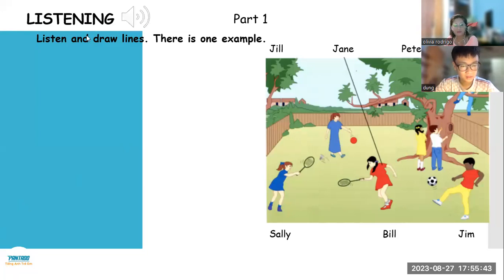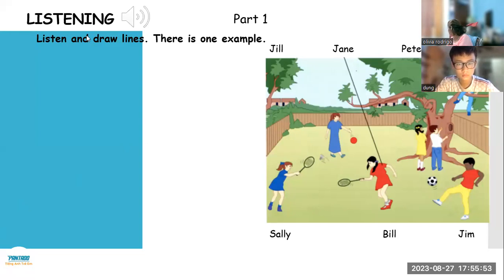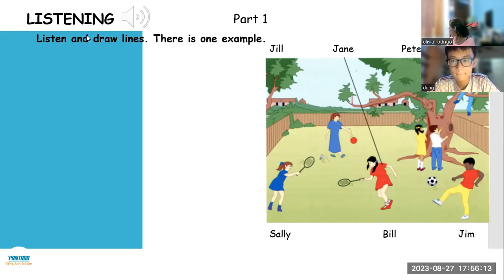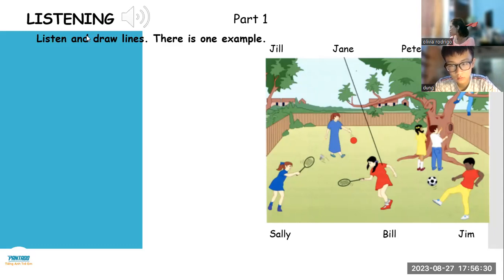Part one. Look at Part One, look at the picture, listen and look, there is one example. Where's Jane? She's in the garden, she's playing badminton. Is she the girl in the red dress? Yes, she is. Okay, I see her. Can you see the line? This is an example. Now you listen and draw lines. One: who's the girl in the blue dress — the girl who's playing badminton or the girl who's bouncing a ball? The girl who's playing badminton. That's Sally. That's right.